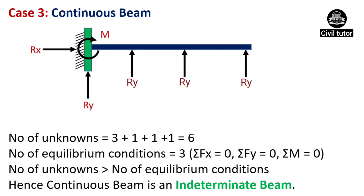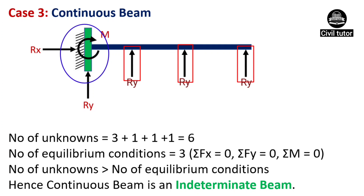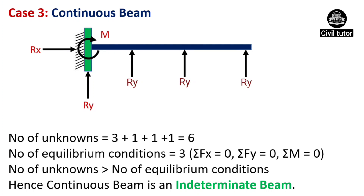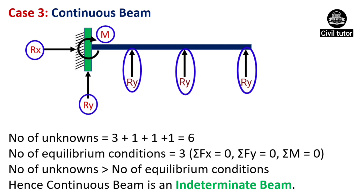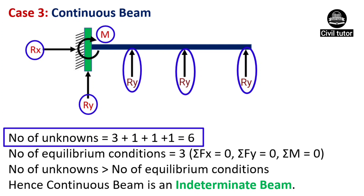Now let's take an example of a continuous beam and see if it's determinate or indeterminate. We have a continuous beam with three support reactions in addition to a fixed end. The number of unknowns equals three (at the fixed end) plus three additional reactions, totaling six — which clearly indicates the number of unknowns is greater than the number of equilibrium conditions. Hence, continuous beam is also an indeterminate beam.